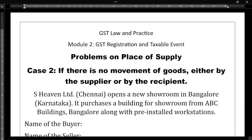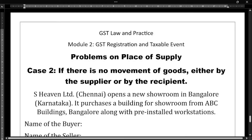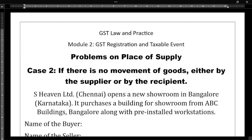In my last part video I had solved the Case 1 problems where the supply involves movement of goods. But in this particular video I'll be solving Case Number 2, in which there is no movement of goods — the supplier will not move the goods and the recipient will also not move the goods, so there is no movement of goods.